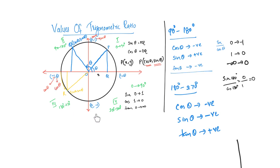Corresponding to the angle, sin 270 degrees equals minus 1, cos 270 degrees equals 0, so tan 270 degrees is 1 divided by 0 format — that's why it's infinity.